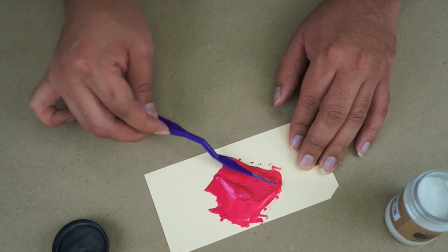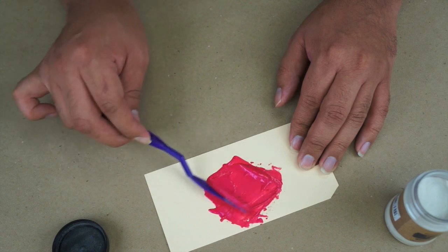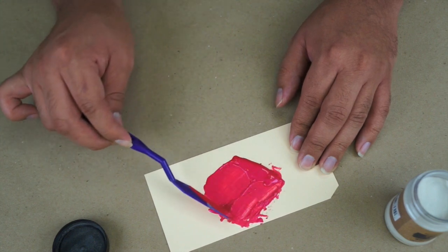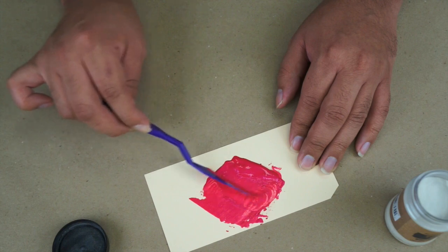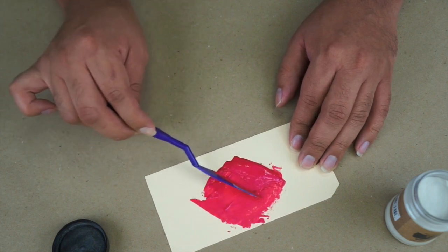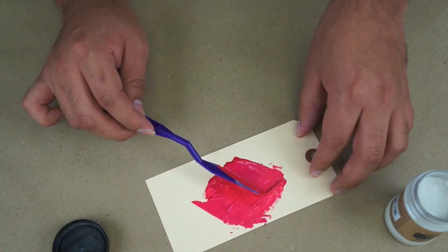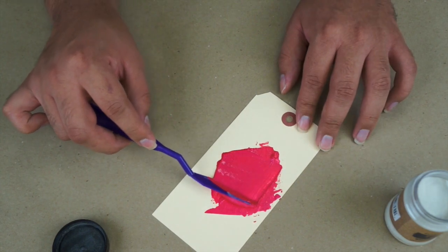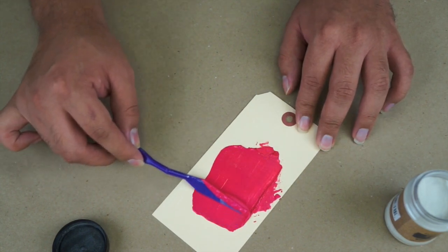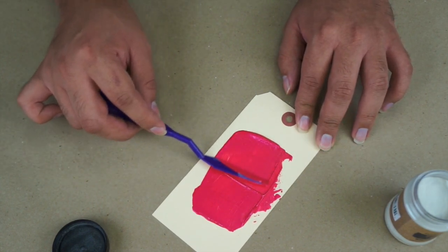So you can take your gesso, your modeling paste, anything you want and blend it together. Now once you have this mix, you can definitely run it through a stencil. You can use it as a paste. You can use it to build shape and form.